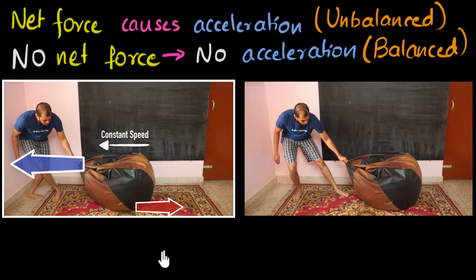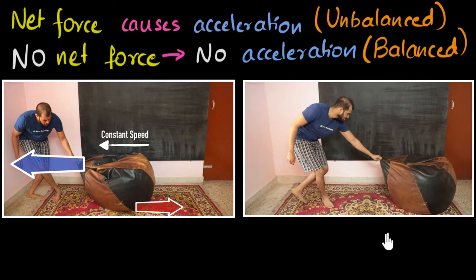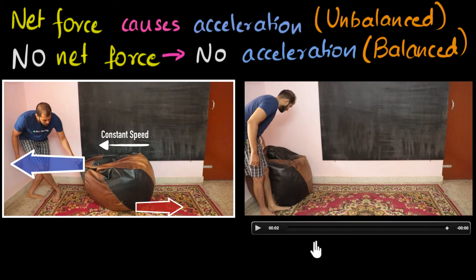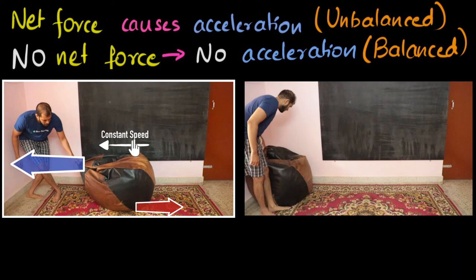It would look somewhat like this. Look over here. If my force was larger, then it would look somewhat like this. See? It would accelerate towards me. But is it accelerating? No. We saw it as going at a constant speed. So this can't be true. Similarly, do you think this can be possible? Do you think friction can be larger than my force? Again, that can't be possible, because again, it would accelerate. This time, because friction is opposing, the beanbag would slow down.